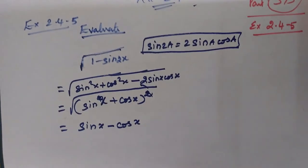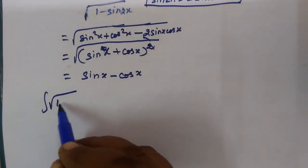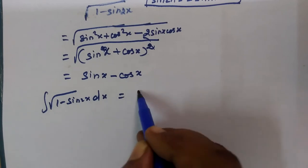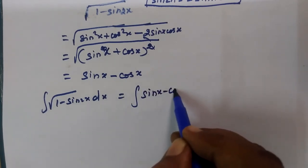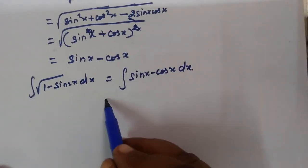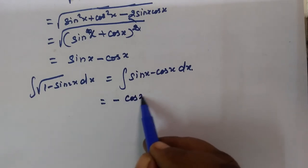Now, the integral of root of 1 minus sin 2x dx equals the integral of sin x minus cos x dx. Integrating sin x gives minus cos x. Minus cos x, so minus minus,